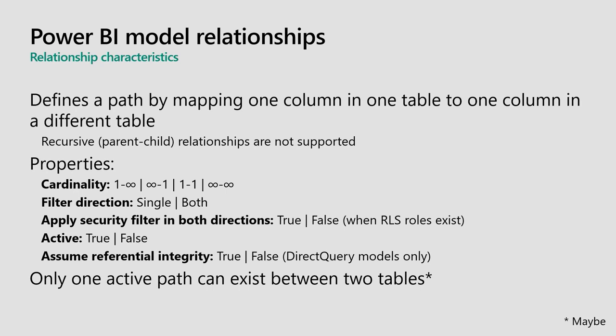Relationships take place between two tables from one column to another. There are no multi-column relationships and no self-referencing relationships. The properties of a relationship are: cardinality (one-to-many, many-to-one, one-to-one, many-to-many); filter direction (single or both); whether it applies security filters for row-level security; whether the relationship is active or inactive; and whether it assumes referential integrity (direct query only, enabling inner joins). Note that there can only be one active path between two tables in the model.